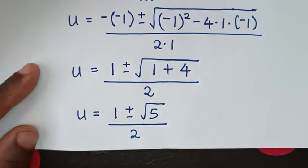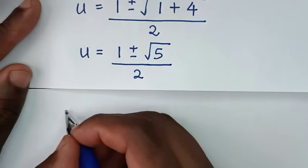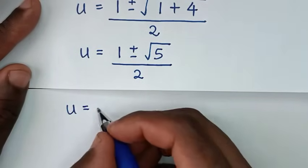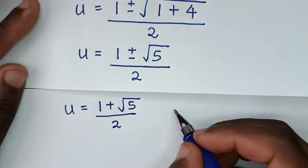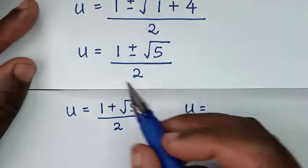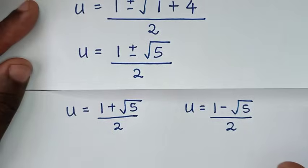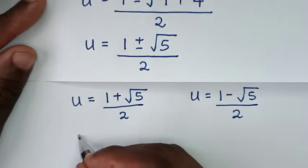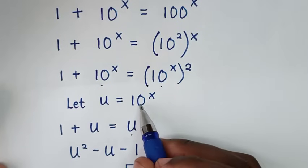We have two solutions because of plus or minus. The first value is u equals 1 plus square root of 5 over 2, and the second value is u equals 1 minus square root of 5 over 2.